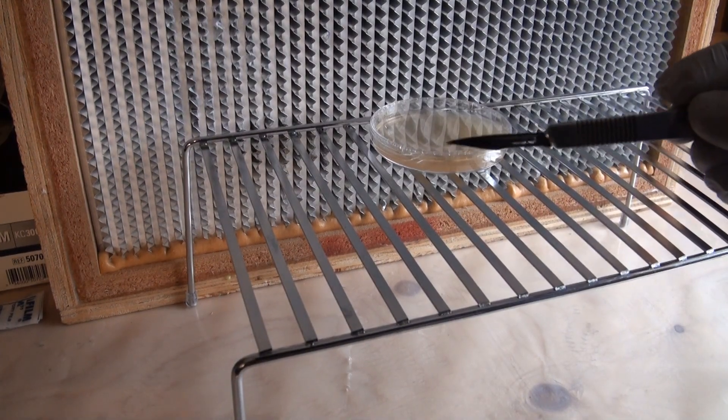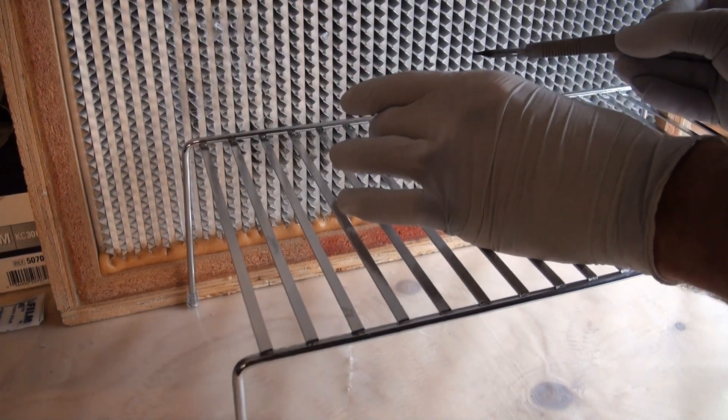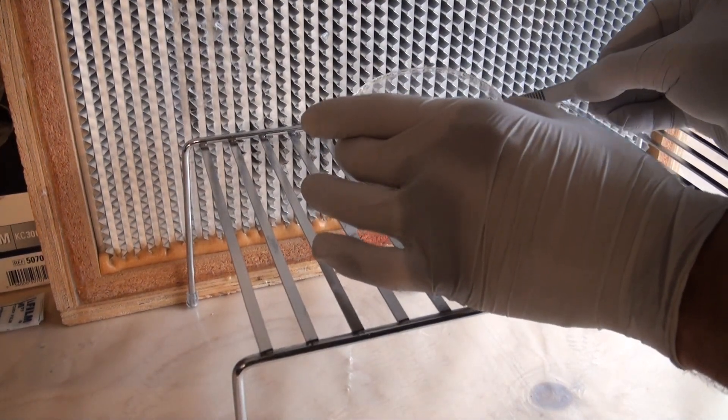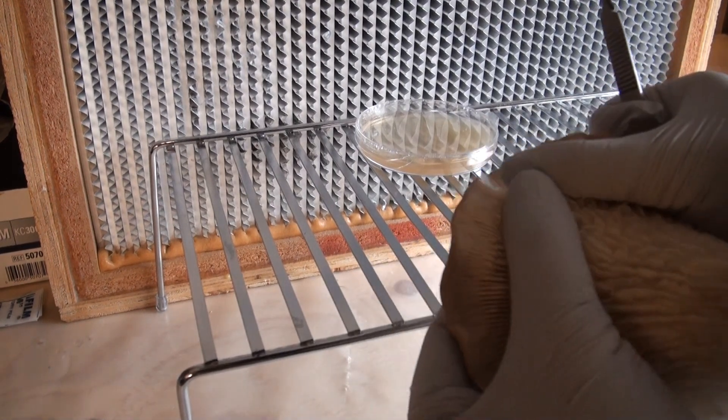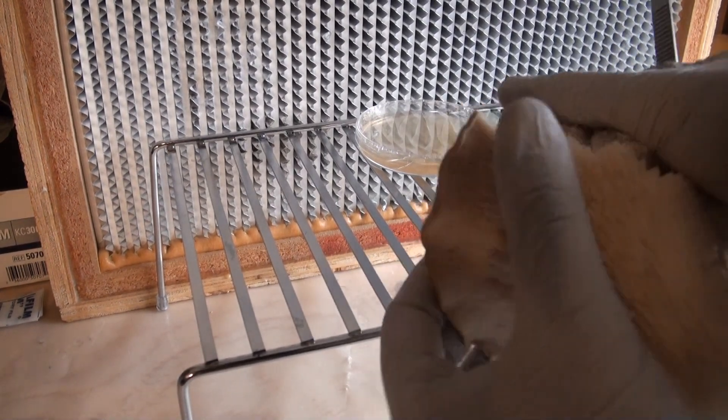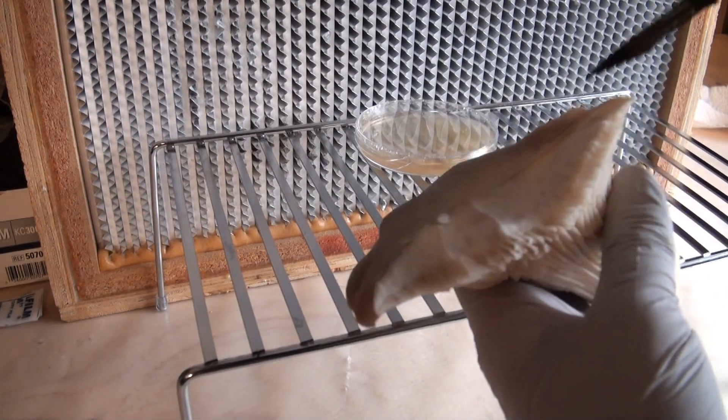So the next thing you want to do is take a scalpel that has been flame sterilized, go ahead and cool it in the dish. You can then take your mushroom fruit body and tear it open to reveal some of the inside of the fruit.